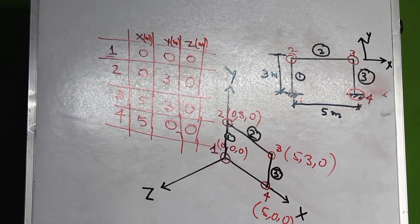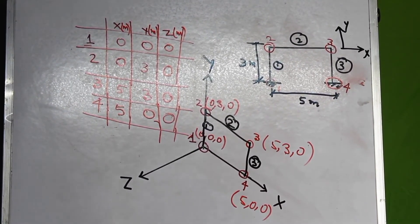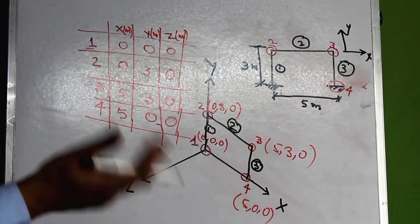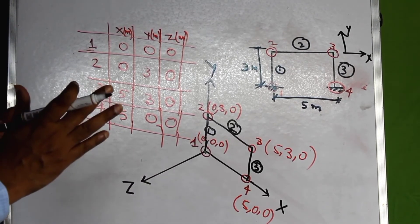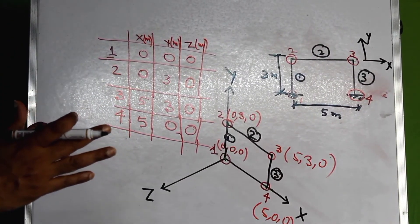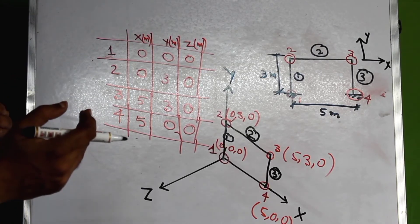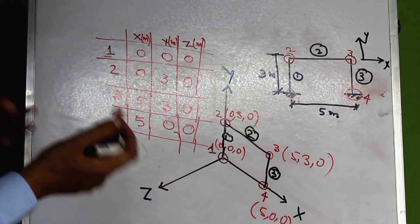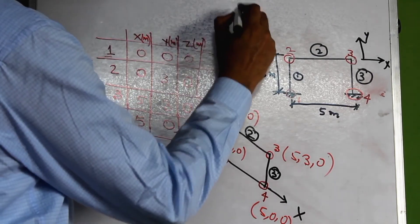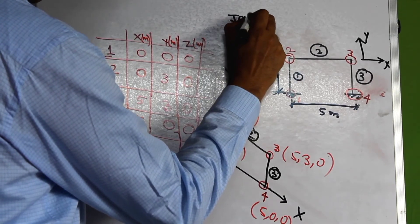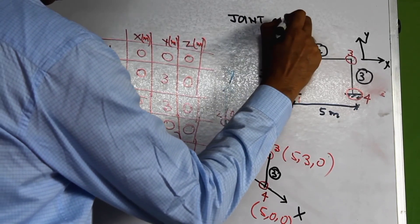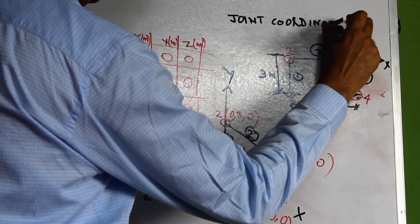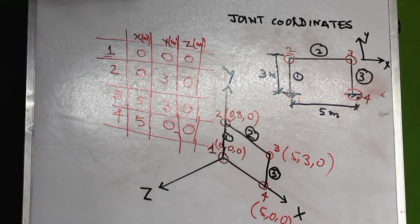For defining the joint coordinates, there is a textual command in STAAD Pro. STAAD follows a command line to generate the structure and then perform analysis and design. The textual command in STAAD Pro to represent the joint coordinates begins with the keyword 'joint coordinates'. We will demonstrate this in detail in STAAD later on.